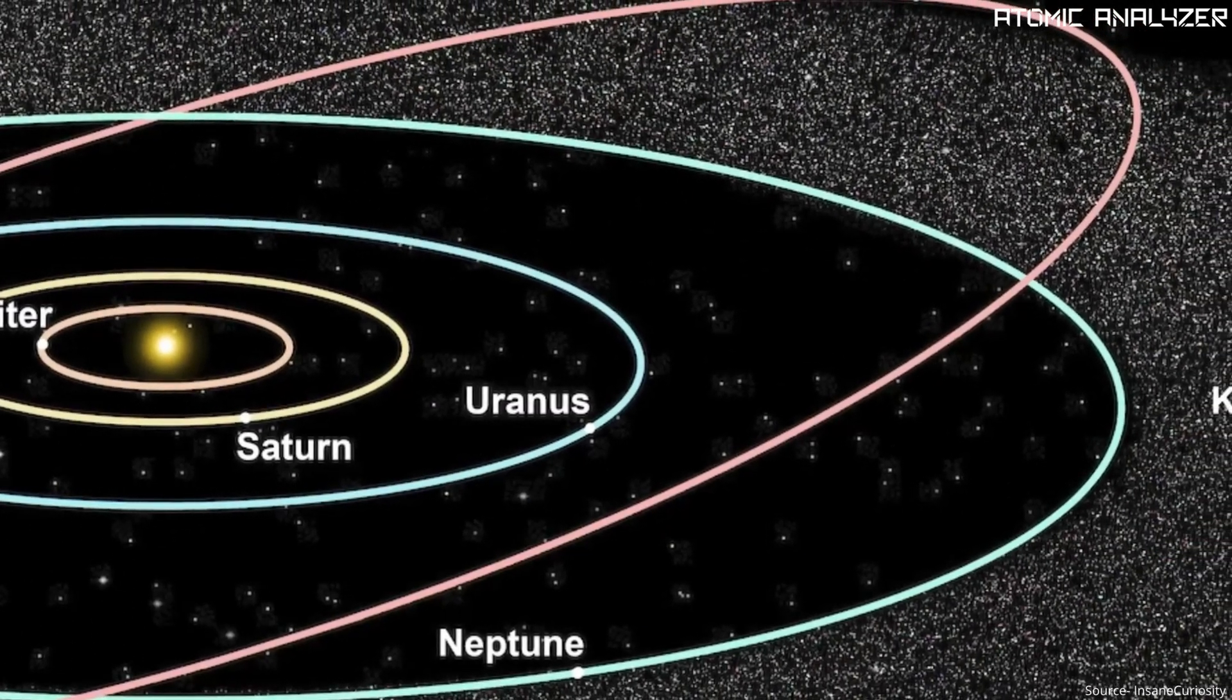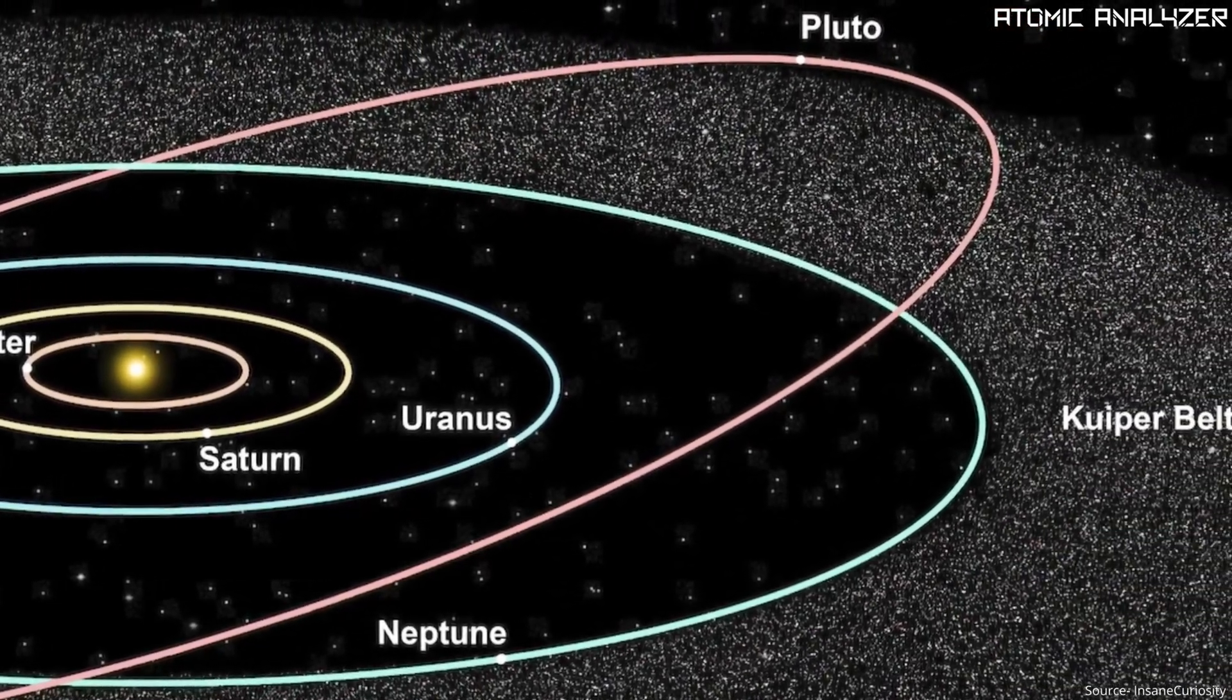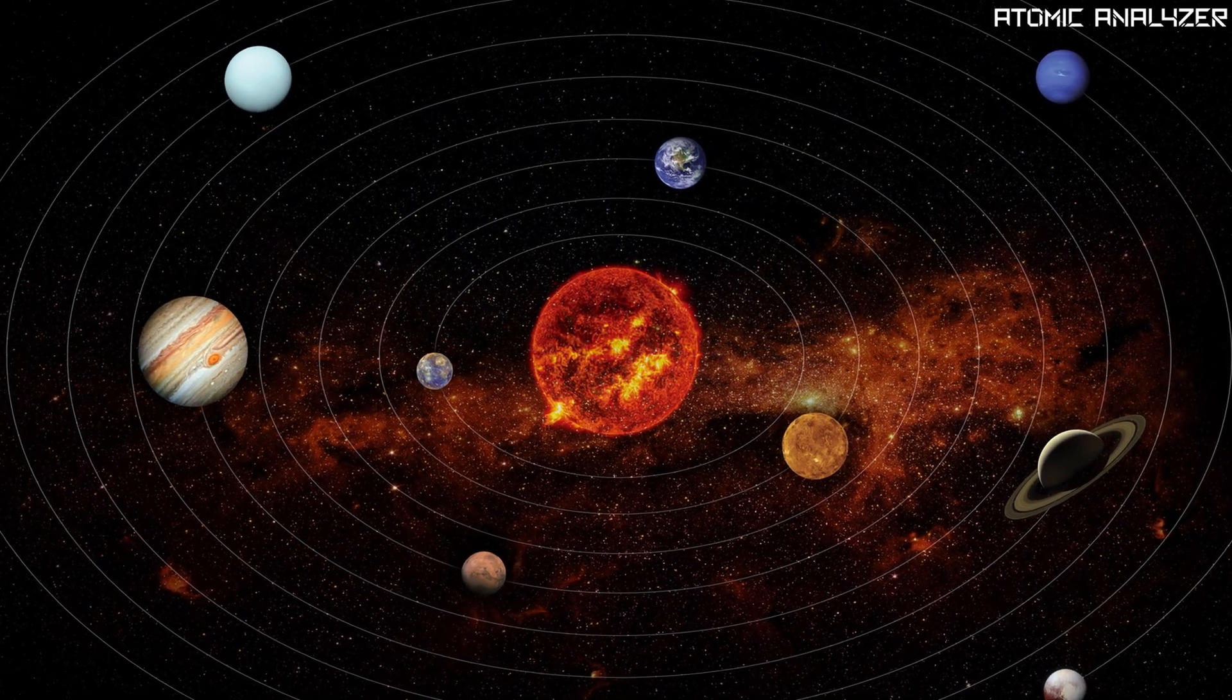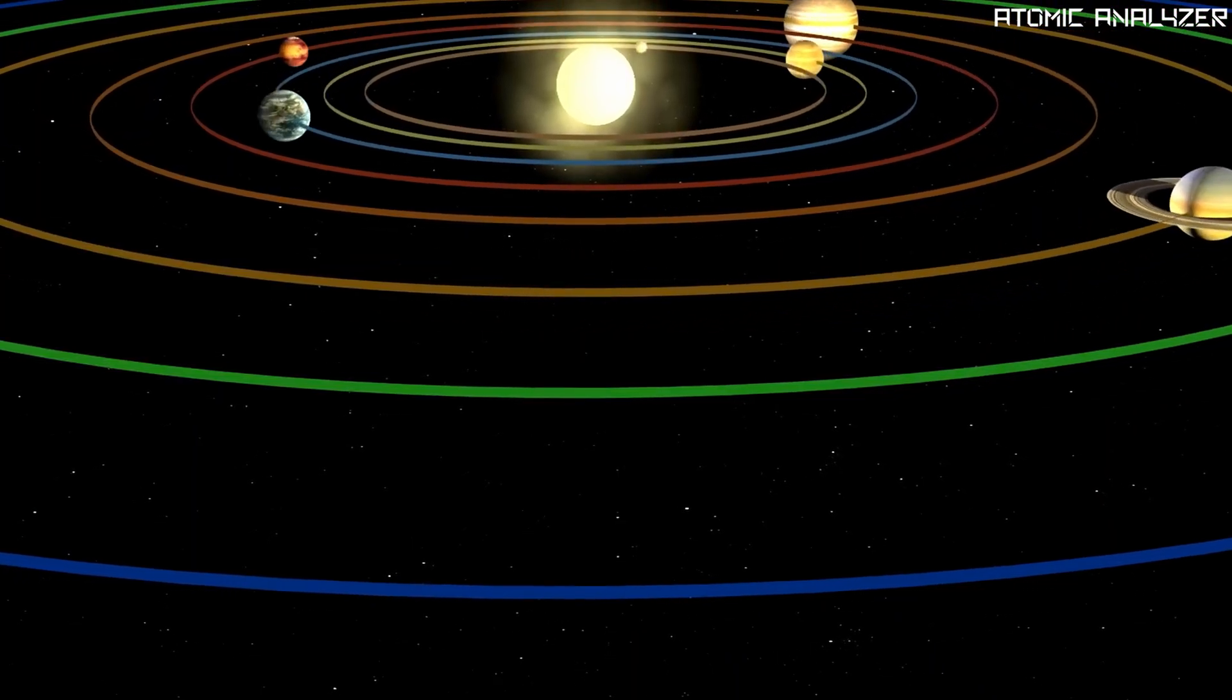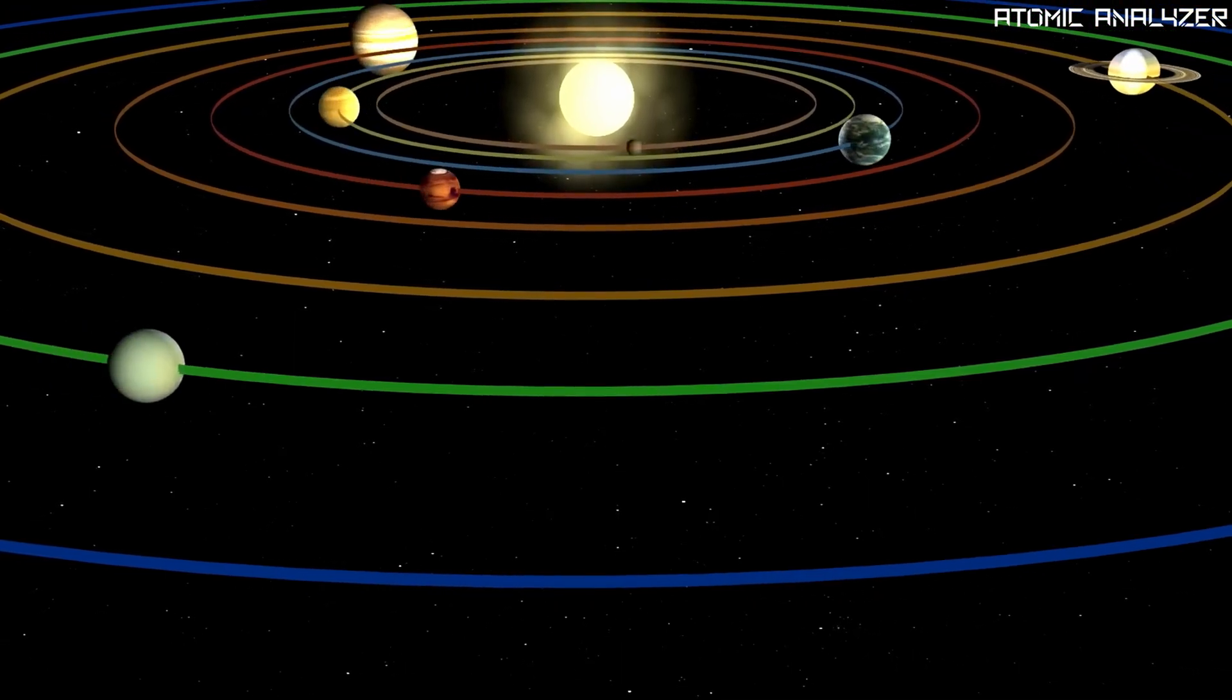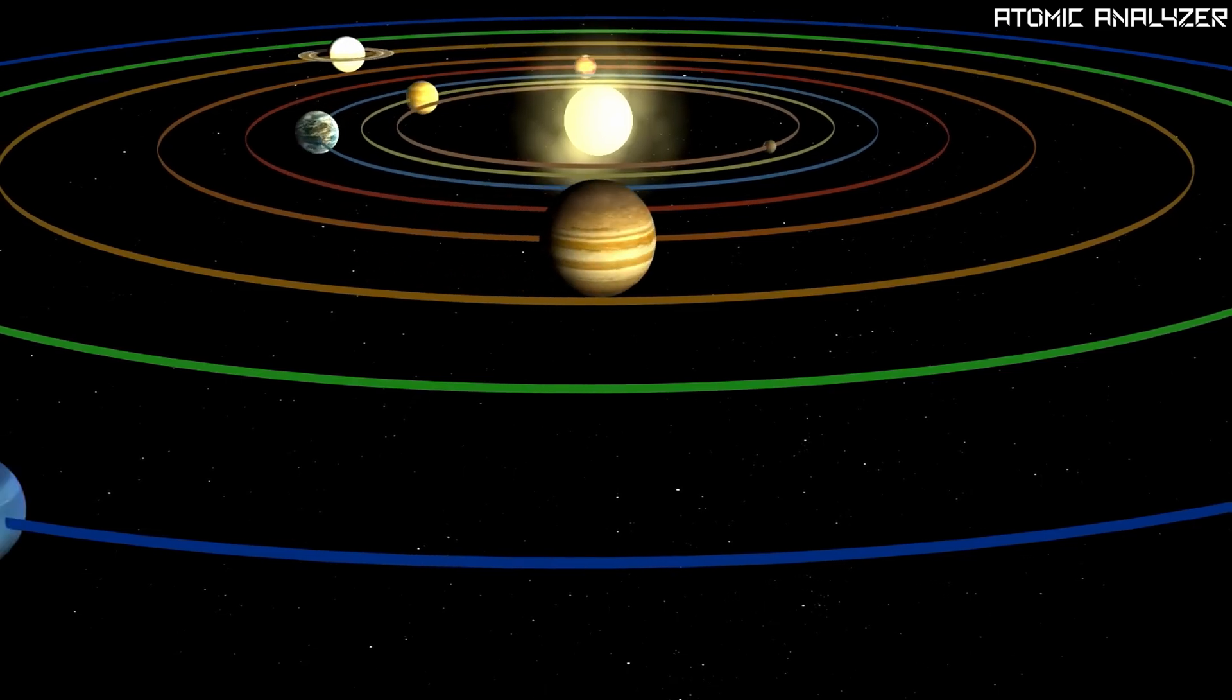The Kuiper Belt is like the quiet backyard of our solar system, hiding some amazing secrets. Imagine our solar system as a big house. In this solar house, the sun is the parent and the planets like Earth, Mars and Jupiter are the kids living closer to the parent.